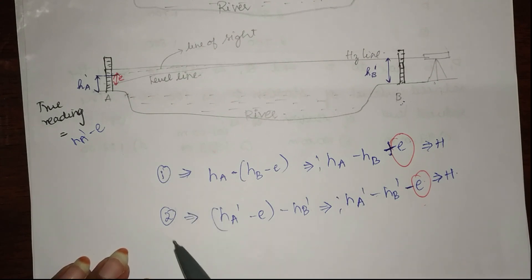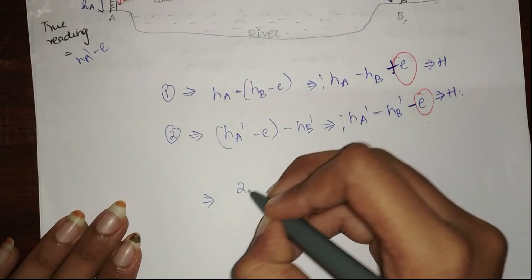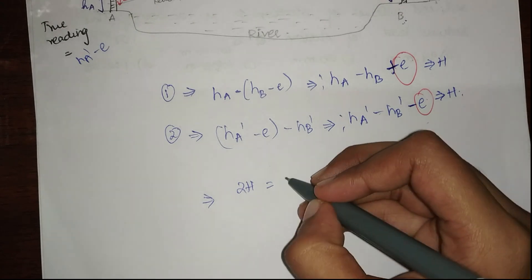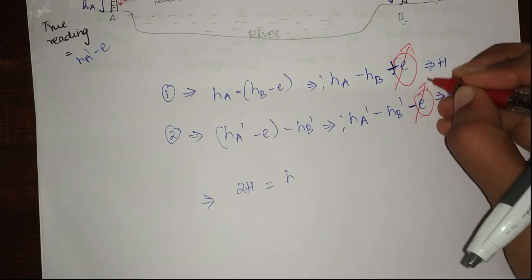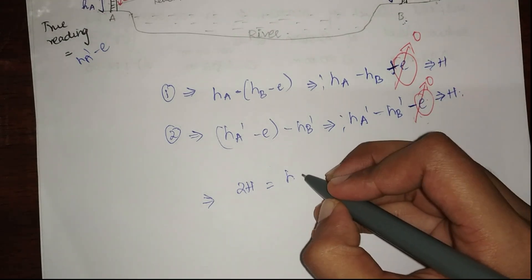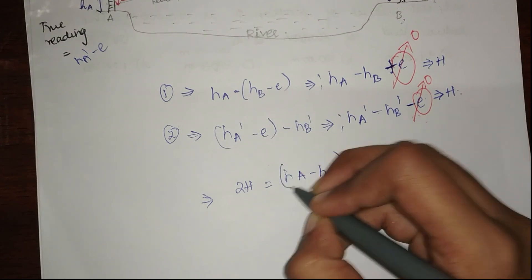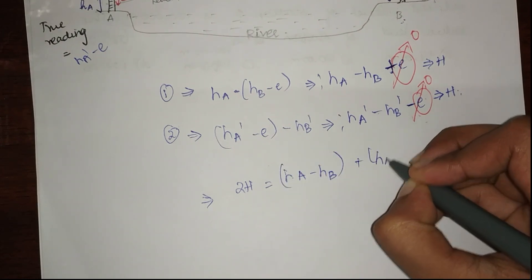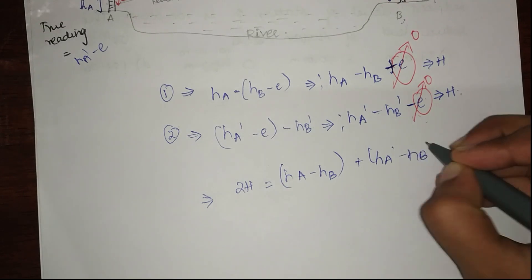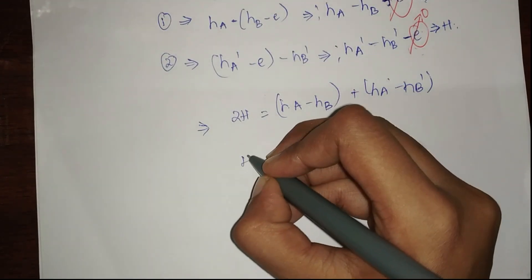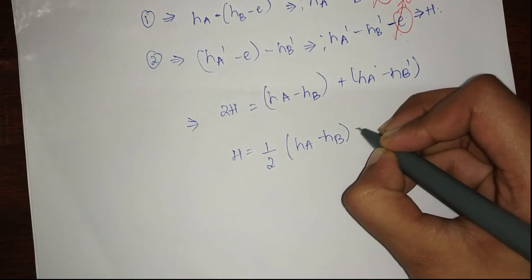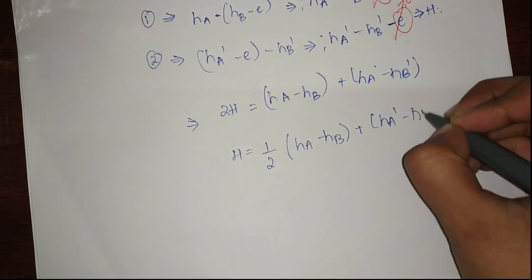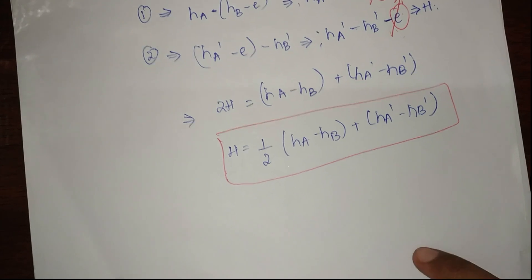In order to eliminate e, we add equations one and two. h plus h gives 2h. The plus e and minus e cancel, and on simplifying we get: 2h = (hA minus hB) plus (hA' minus hB'). This can be simplified further as: h = (1/2) × [(hA minus hB) + (hA' minus hB')].